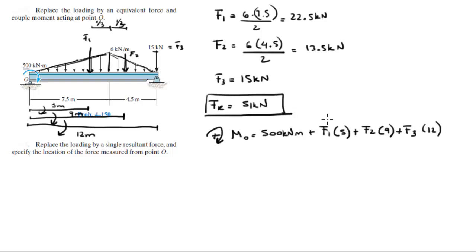And F3, which is 15, is also positive and is turning the 12 meter lever arm. So when you plug in F1, F2, and F3, which we found up here, you get that the moment is equal to 914 kN·m clockwise because it's positive.